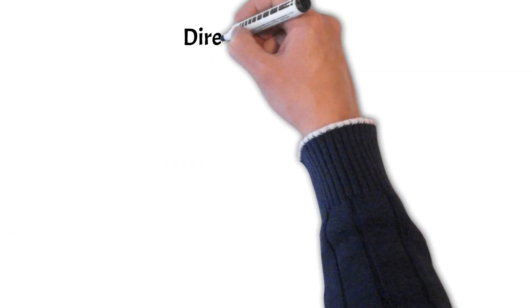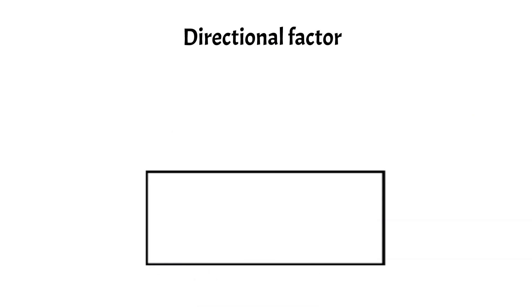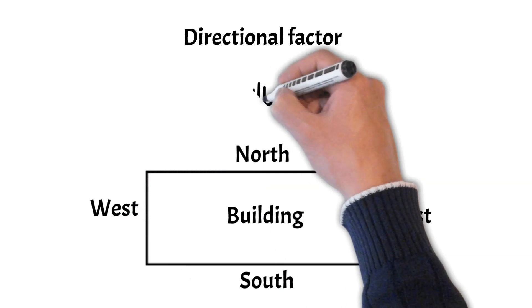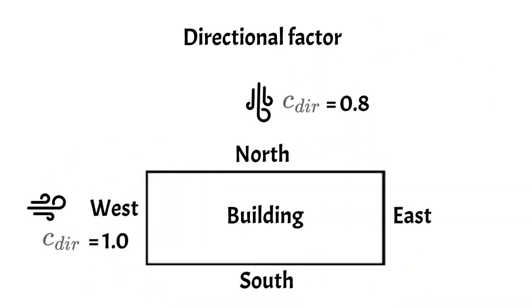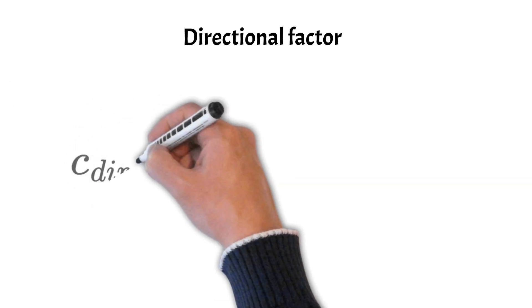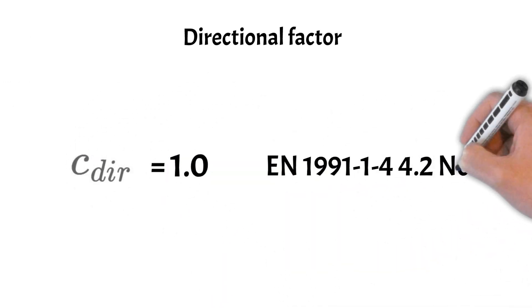The principle of the directional factor is that the wind is blowing less from certain directions and therefore the peak velocity pressure and the wind load can be reduced for those directions. The recommended value for the directional factor is given in Eurocode S1. However, it is also referred to the national annex which might define the value differently. In further calculations the directional factor is not included.